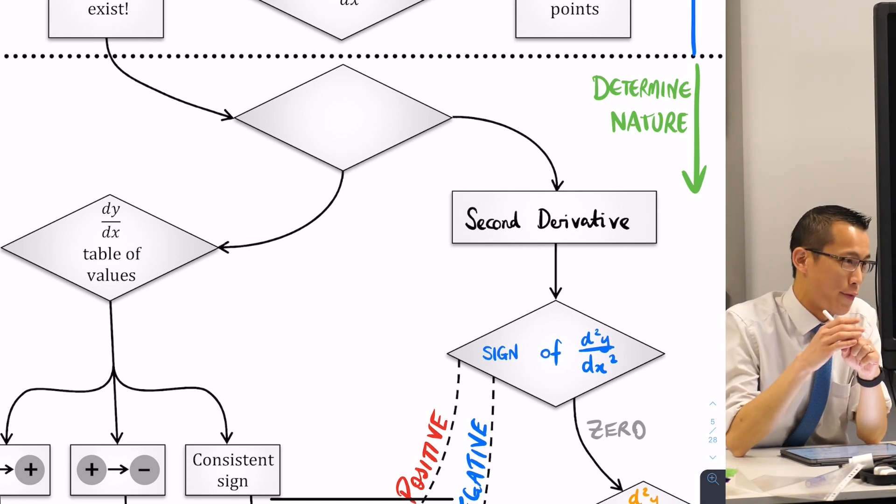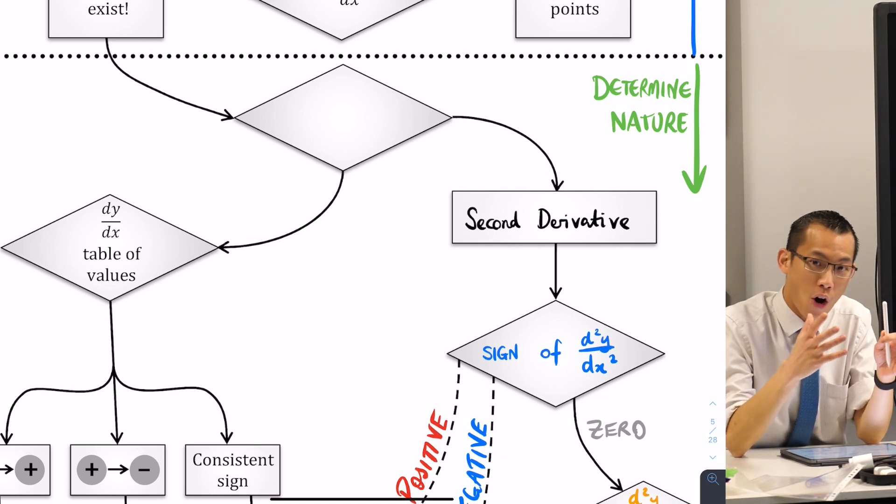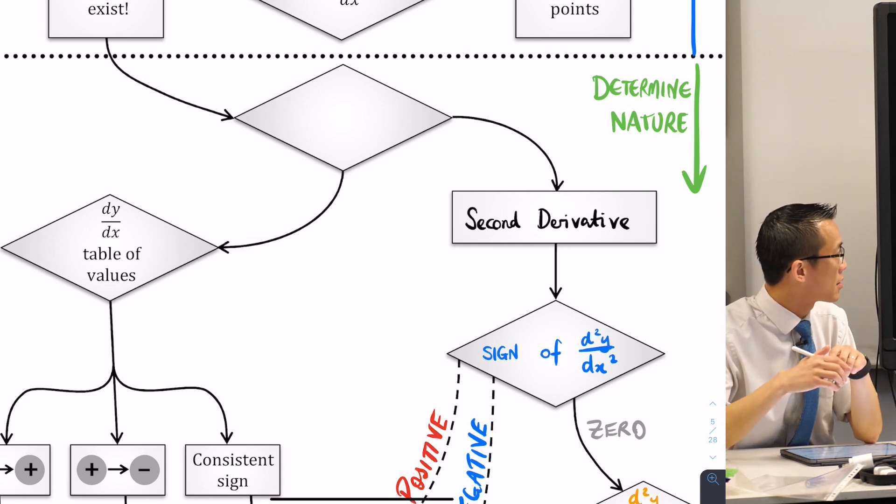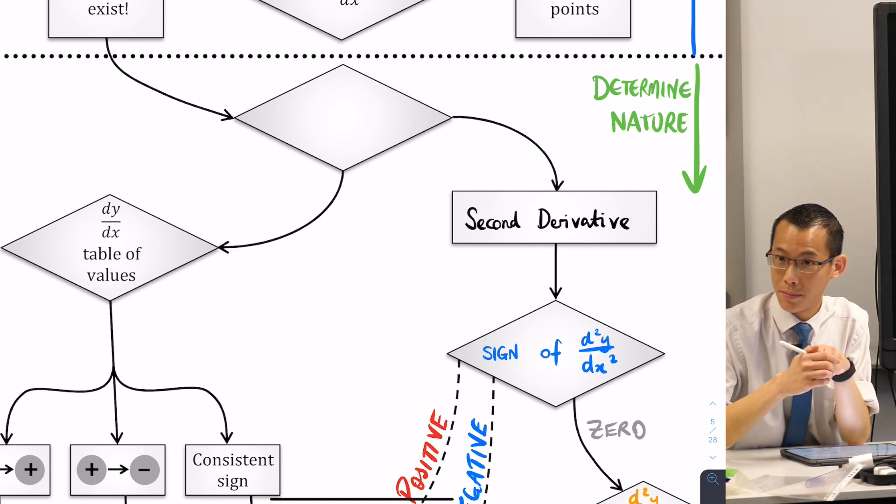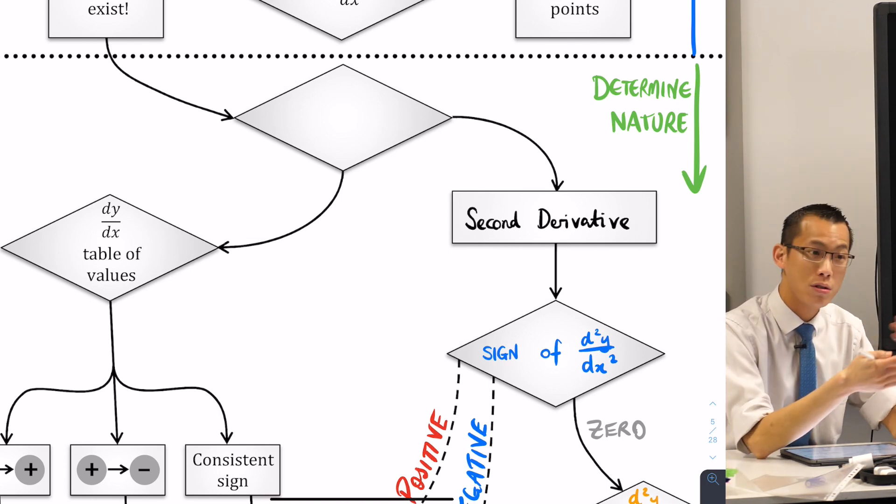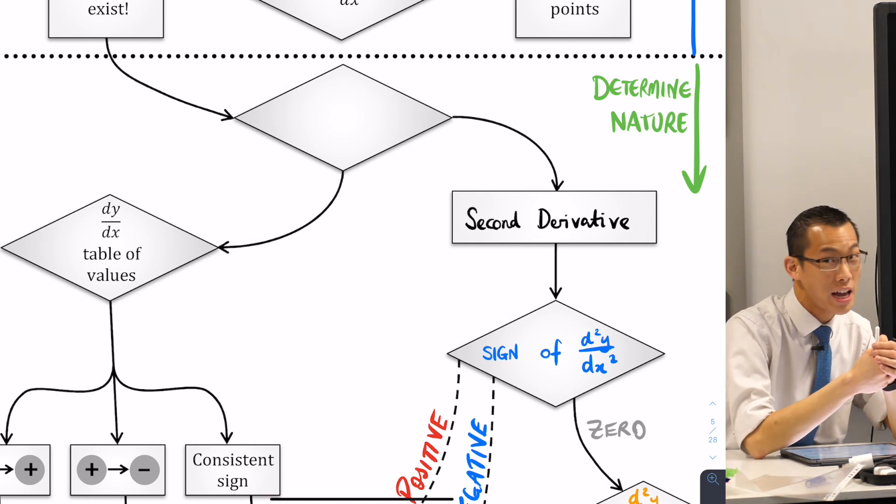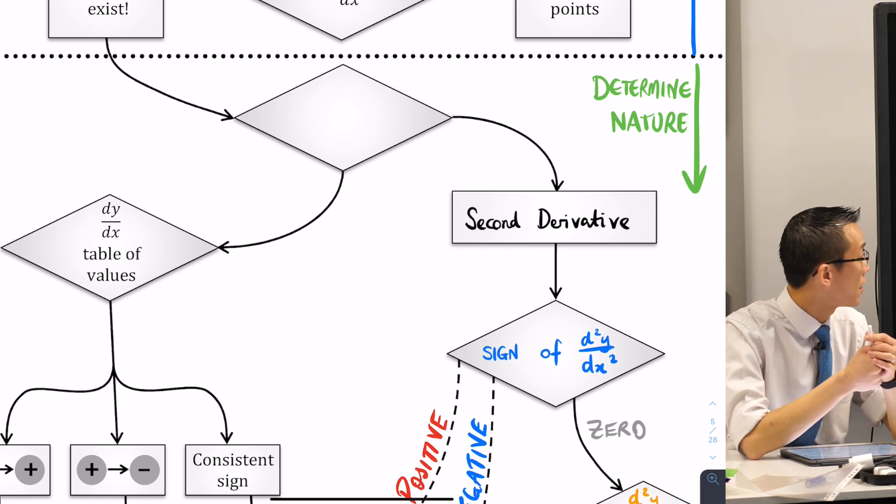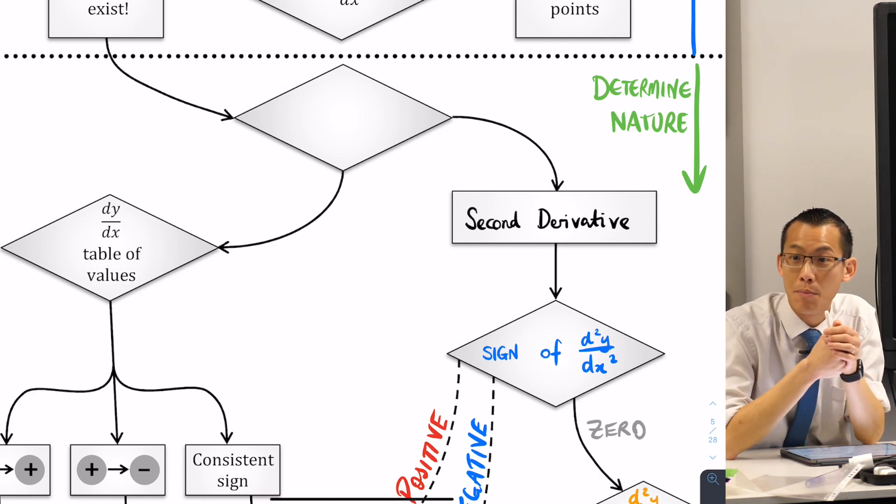The reason this flowchart is so big in the first place is because the whole point is when you've got stationary points you have to make a choice. Now that you know about the first derivative and the second derivative you can choose which one to use and one is sometimes better than the other and that's what this box is here in the middle for.